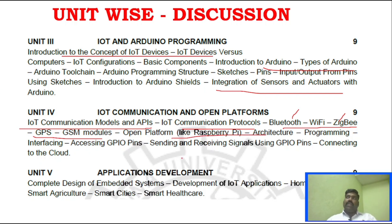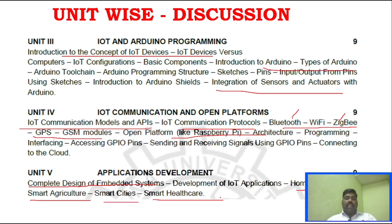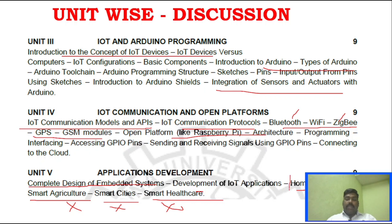Unit 5 is a trump card unit. The first thing is the complete design of an embedded system, which is for Part B. Just go through home automation, smart agriculture, smart cities, and smart healthcare — these three areas are important for sure. For Part C, one question is on home automation.